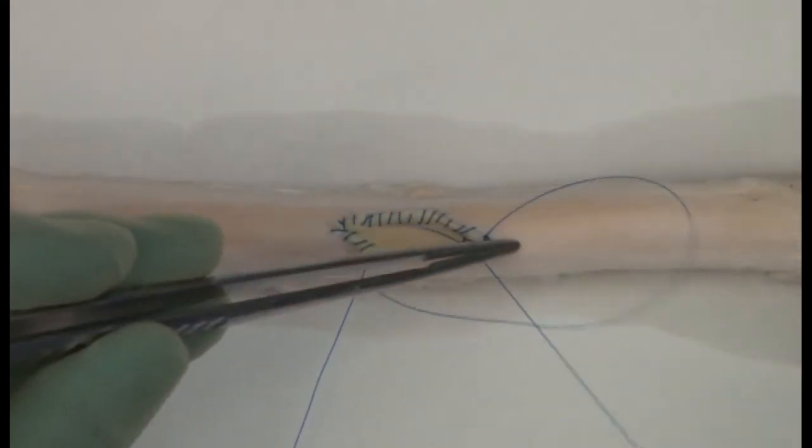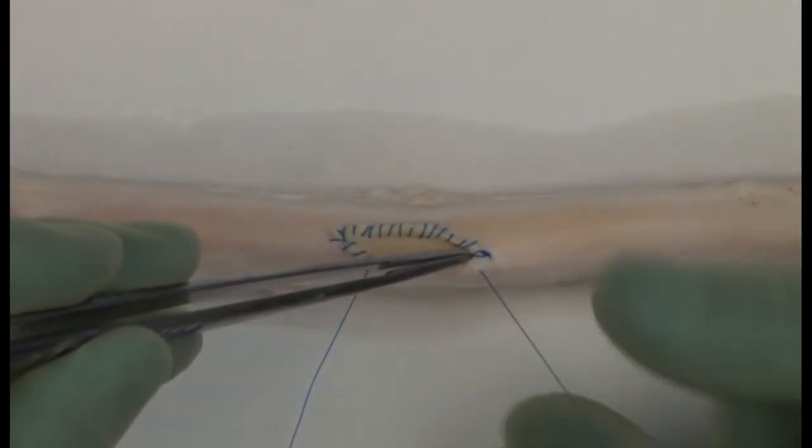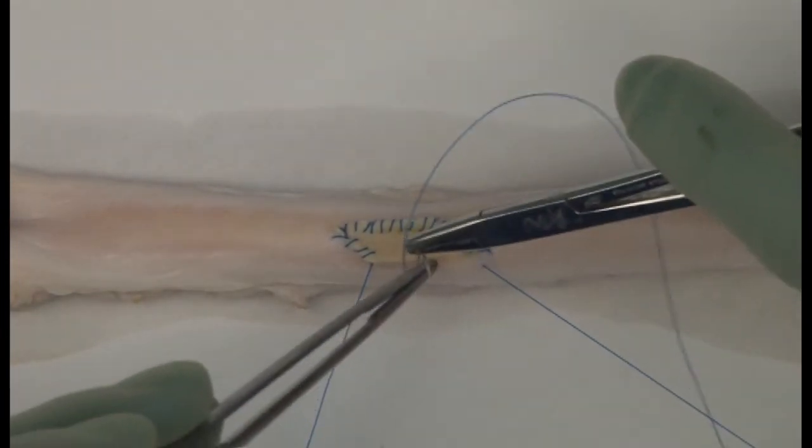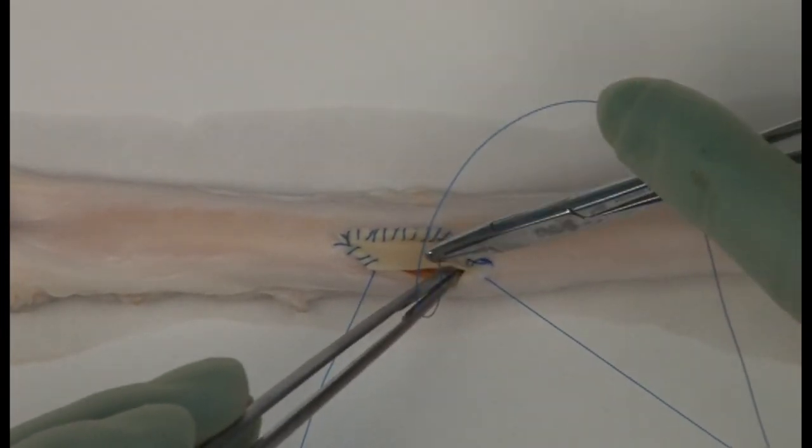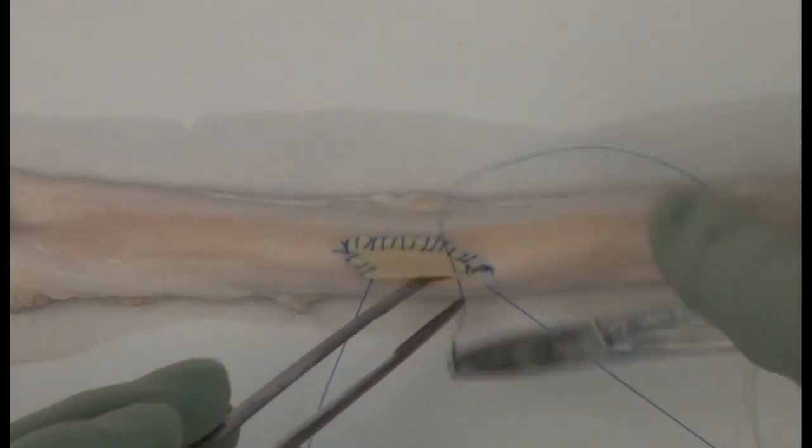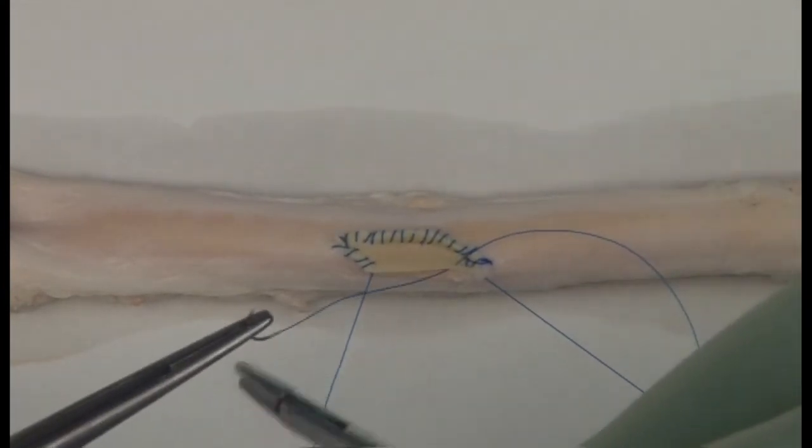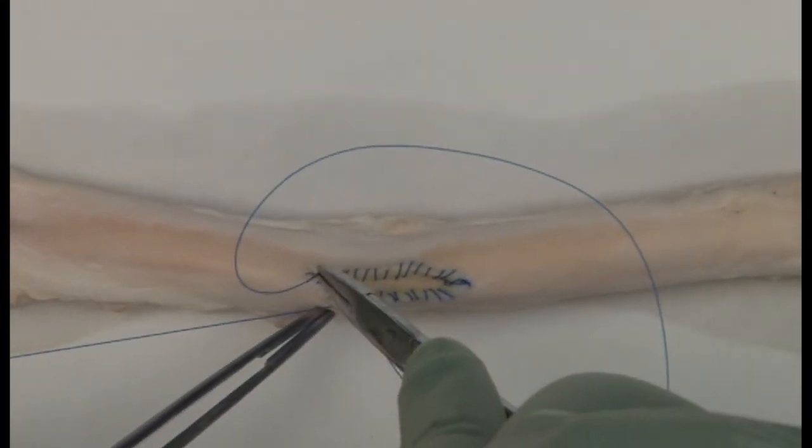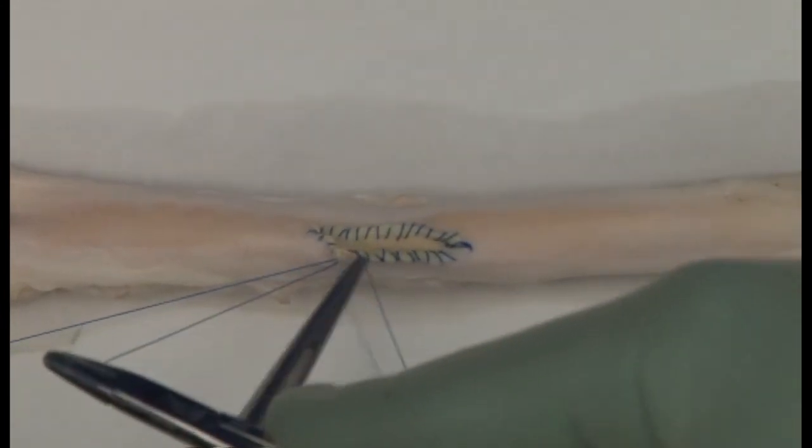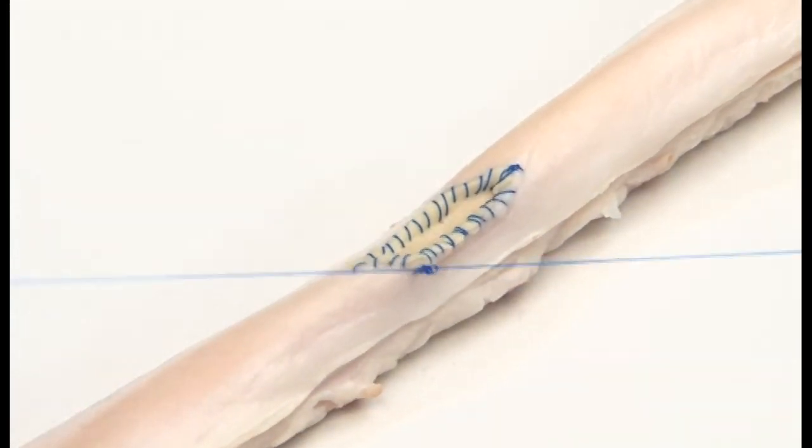Take care not to handle the suture material or the arterial wall with your forceps. Continue to join the other end of the suture, then tie the sutures together. Do this with a reef knot using six or more throws, laying each one correctly with care, and then cut the suture.